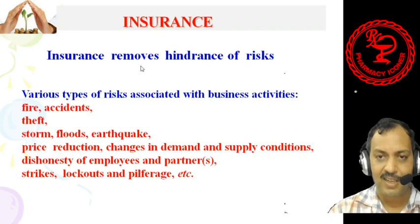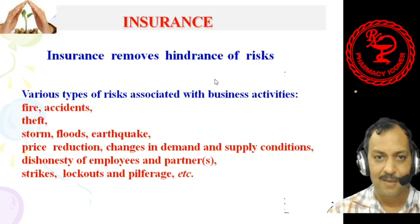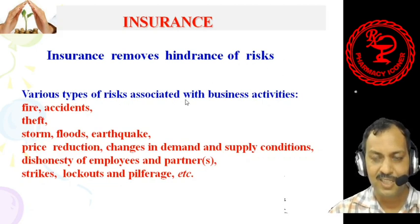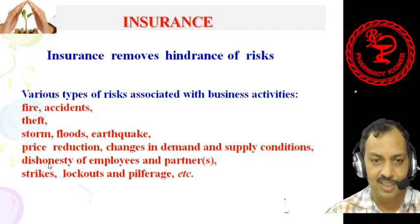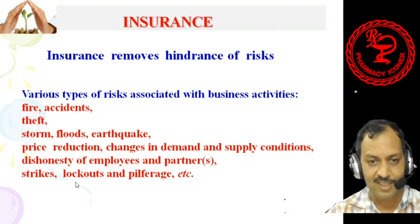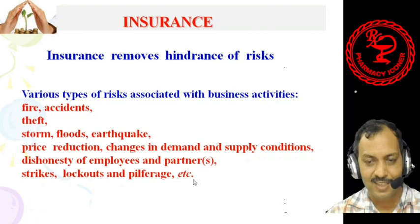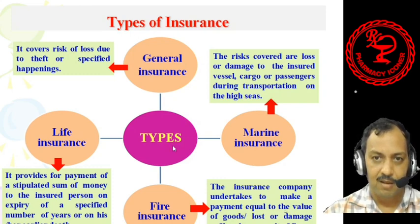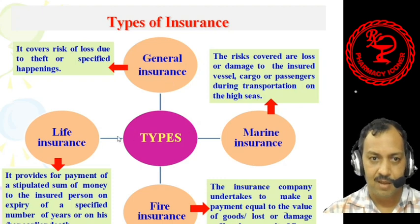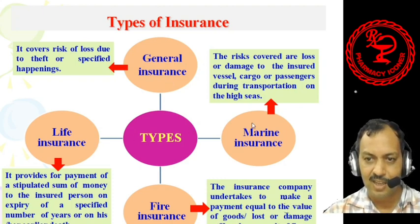Insurance is one of the aids to trade which removes the hindrance of risk. Various risks are associated with business activities, including fire, accidents, thefts, storm, floods, earthquake, price reduction, changes in demand and supply conditions, dishonesty of employees and partners, strikes, lockouts, and pilferage. There are various kinds of insurance: general insurance, life insurance, fire insurance, and marine insurance.